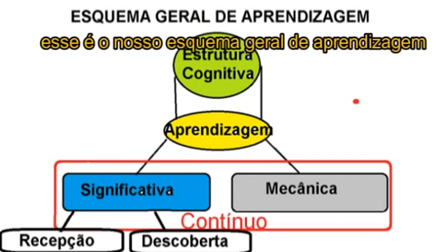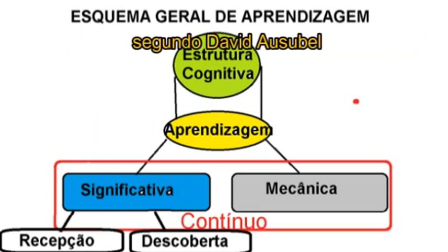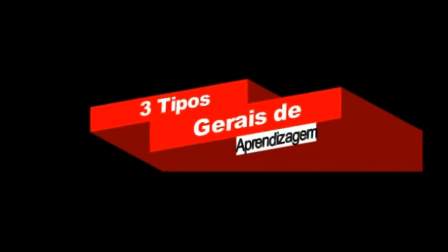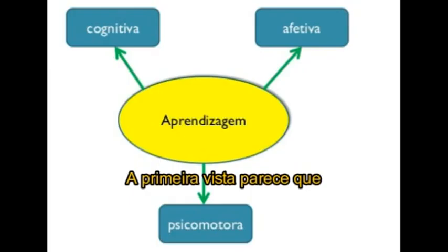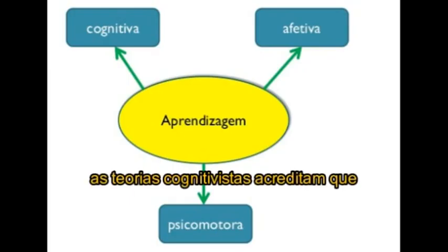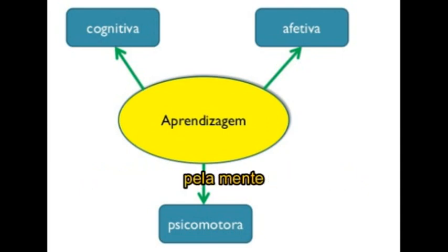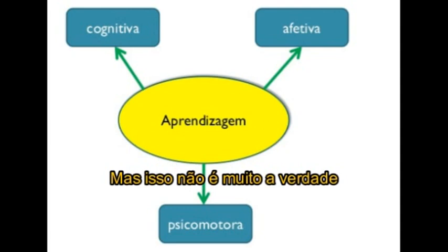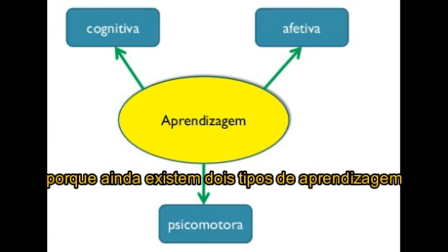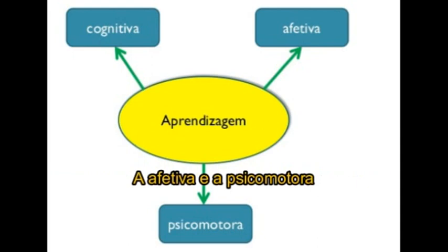Esse é o nosso esquema geral de aprendizagem segundo David Ausubel. À primeira vista, parece que as teorias cognitivistas acreditam que se aprende apenas pelo intelecto, pela mente, mas isso não é muito verdade, porque ainda existem dois tipos gerais de aprendizagem: a afetiva e a psicomotora.